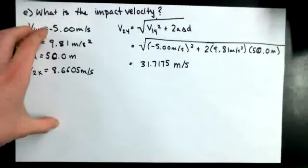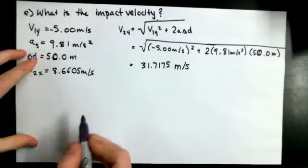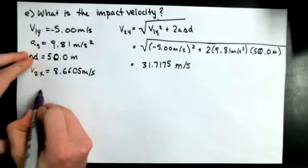So now that we have V2Y and V2X, we're going to create a triangle because we need to solve for both the final velocity and the angle of the final velocity.